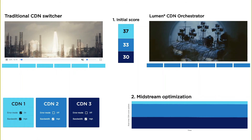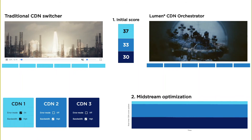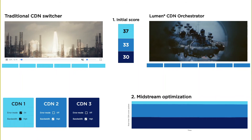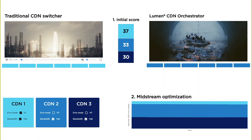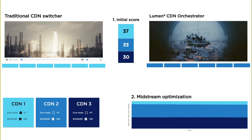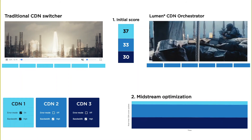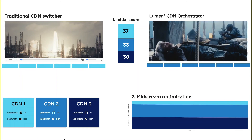CDN Orchestrator thereby dampens the effect of a CDN failure in two ways: against a service outage of a CDN that is down, and against any subsequent issues caused by a massive wave of page refreshes. To go a little bit further, let's look at what happens if CDN2 starts returning errors.